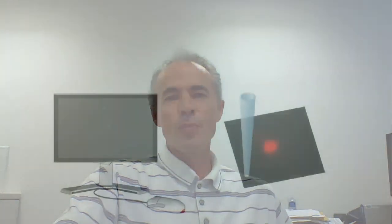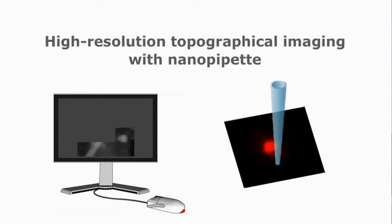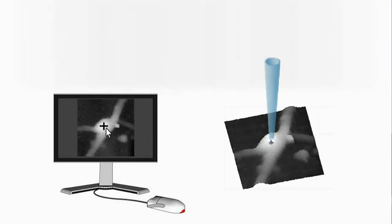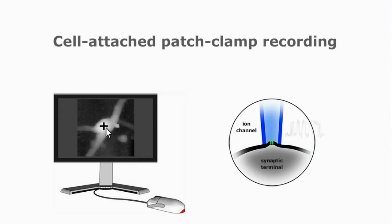To target the small presynaptic bouton, first we can perform fluorescent measurement to identify the active presynaptic bouton, and then target the area with scanning ion-conductance microscopy. And after imaging, using the help of automated control, we can navigate the probe exactly to the exposed surface area of the bouton to perform patch-clamp recording.